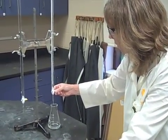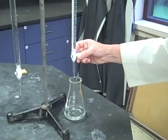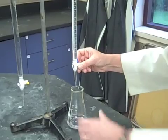So, I am going to slowly open up the stopcock where we're getting the dripping action. And when you have a partner, this is when you should have your partner, one of you controlling the stopcock and the other person should be controlling the swirling.